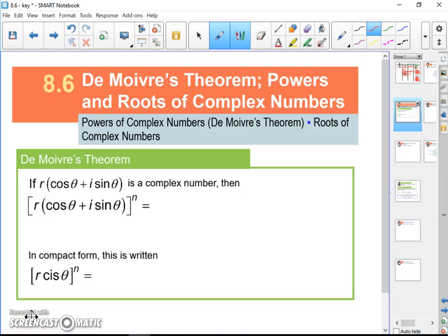Section 8.6 is on De Moivre's theorem and it's going to be the nth root theorem as well. They start off with De Moivre's and I like the compact version. I think it's a lot easier to read.